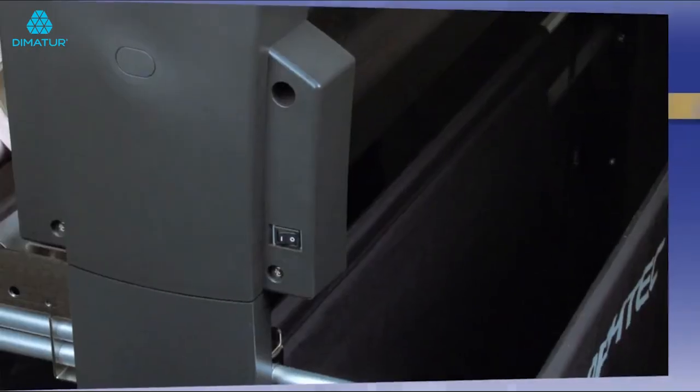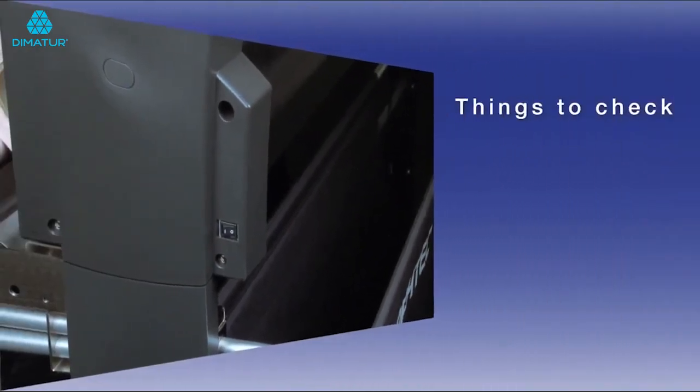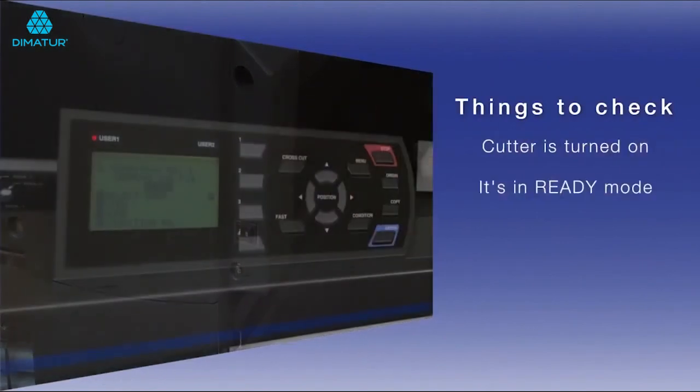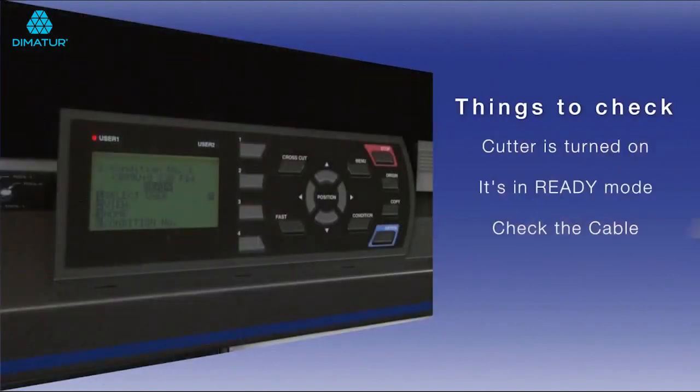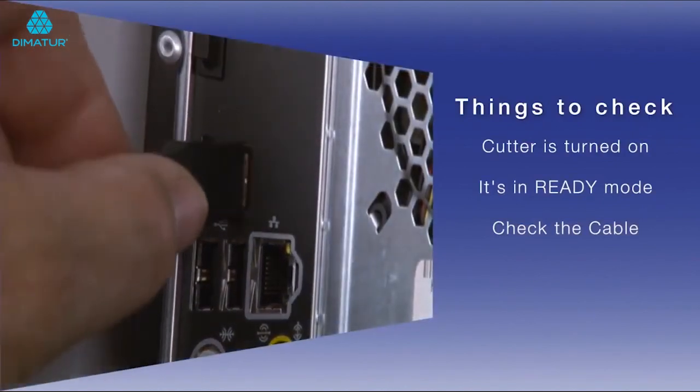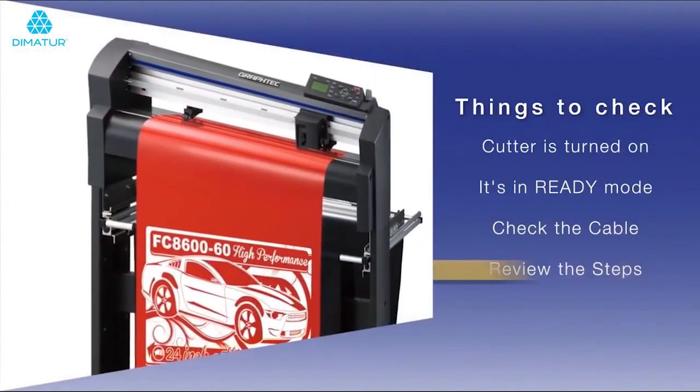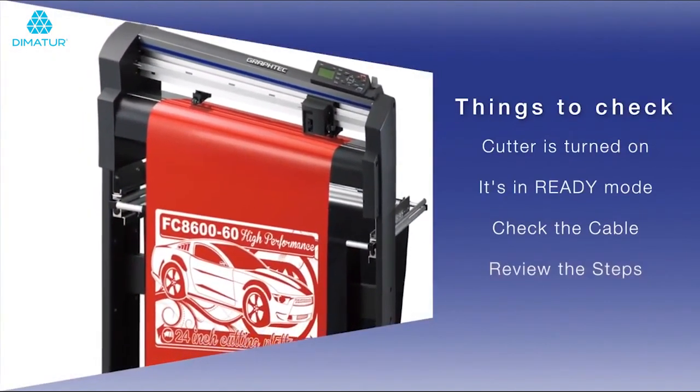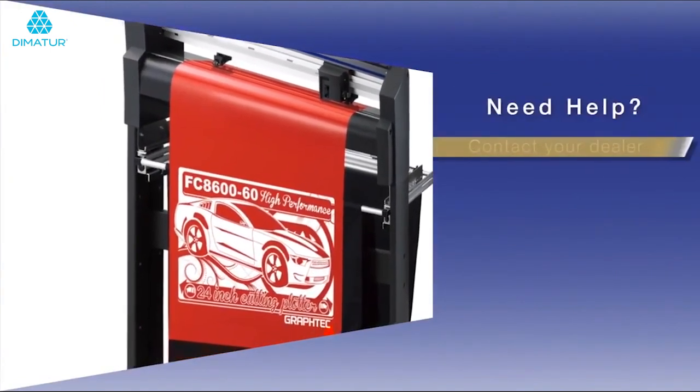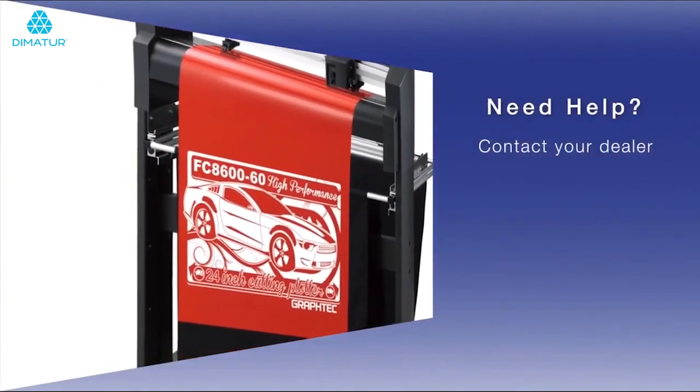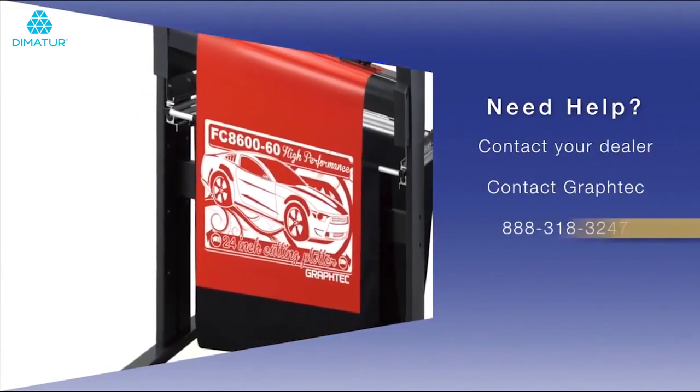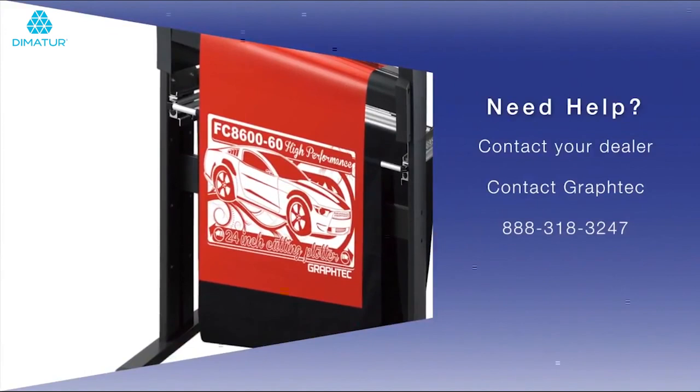If it doesn't move, then there are a couple things you can check. First, make sure that the cutter is turned on and is in ready mode. Next, check the cable to make sure it is plugged in correctly to both the cutter and the computer. If it still doesn't work for some reason, review the steps we have just covered to make sure a step wasn't missed. If you still have issues, contact your dealer where you bought the cutter, or contact Graphtec's Technical Support Department at 888-318-3247.